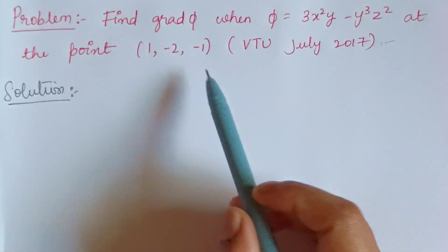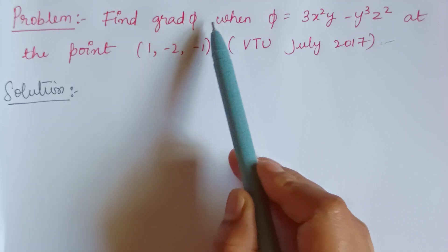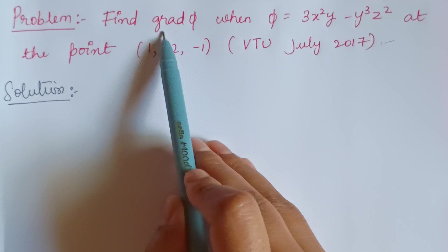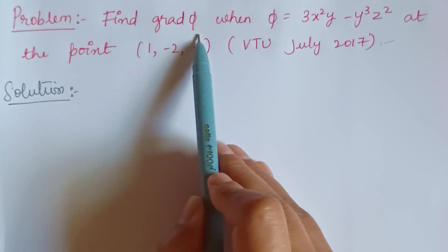In this video, we are going to find the gradient of a scalar point function phi. This is denoted by grad phi. We are finding a gradient of a scalar function phi.